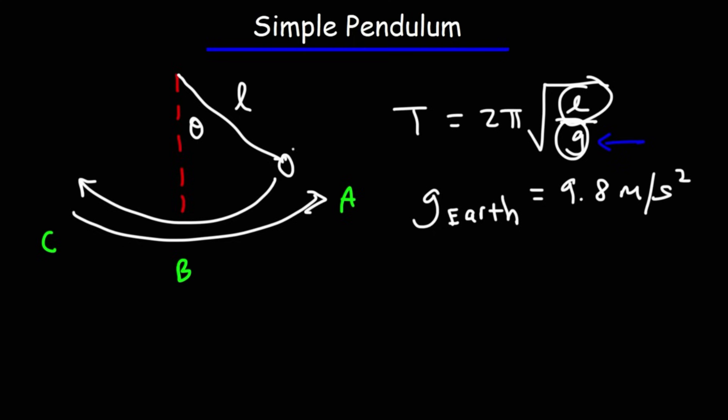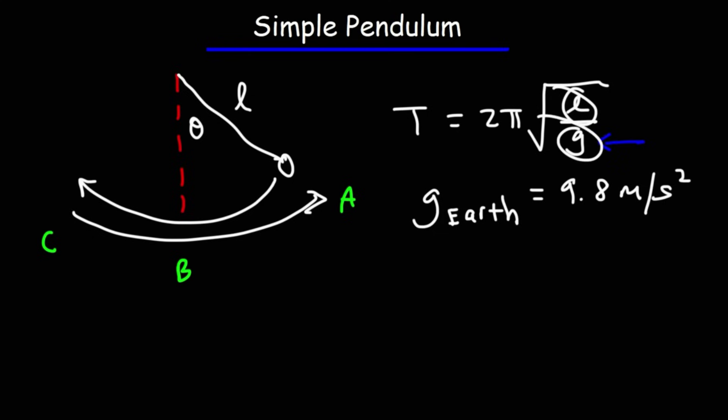The time it takes to make one complete swing depends on the length of the pendulum and the gravitational acceleration. As you can see, mass is not part of that equation. Therefore, the period of a simple pendulum is independent of the mass. Increasing the mass of the bob will not change the period. The period only depends on the length and the gravitational acceleration.